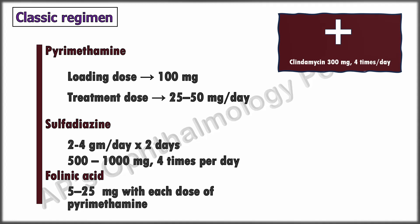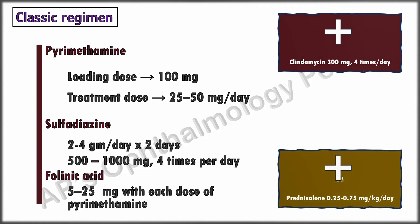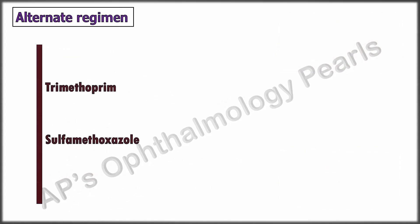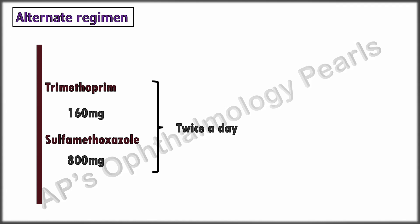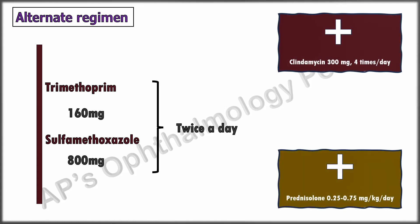Clindamycin 300 mg four times a day may be added to the classic regimen or substituted for sulfadiazine in cases of sulfa allergy. Systemic corticosteroids in immunocompetent patients added to the classical regimen is referred to as triple therapy; adding clindamycin is quadruple therapy. Steroids should only be given under the cover of antitoxoplasma drugs. Treatment is given for four to six weeks in immunocompetent patients, and for four to six weeks beyond all clinical manifestations — often up to six months or longer — in immunodeficient patients.